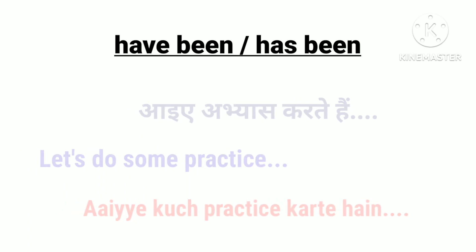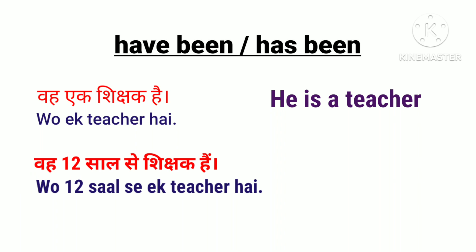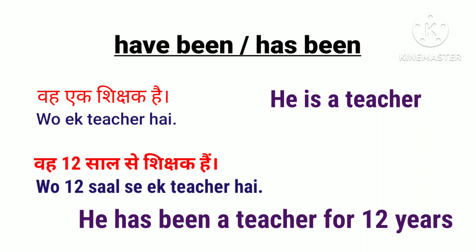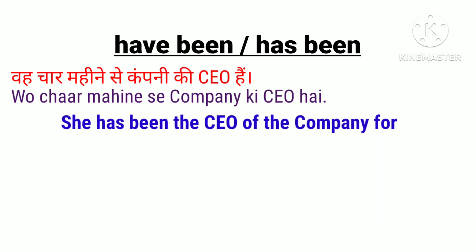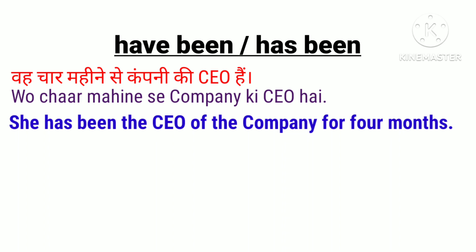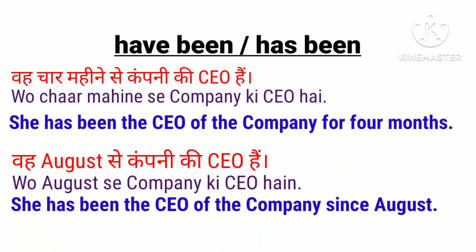آئیے ابھیاز کرتے ہیں۔ He is a teacher — وہ ایک teacher ہے۔ اگر بارہ سال سے لگانا ہے: 'He has been a teacher for 12 years.' For کا use کریں گے کیونکہ یہاں period ہے — بارہ سال۔ وہ چار مہینے سے company کی CEO ہے: 'She has been the CEO of the company for four months.' وہ August سے CEO ہے: 'She has been the CEO of the company since August.'